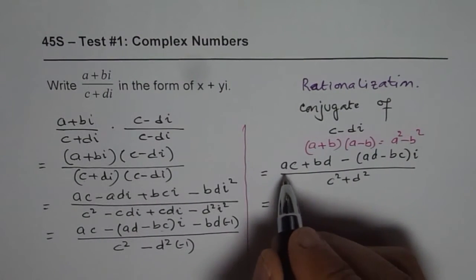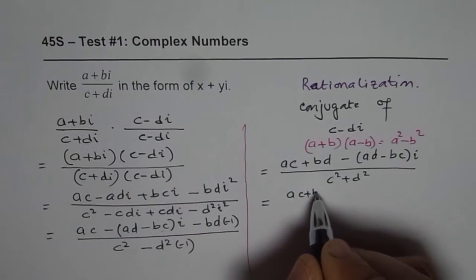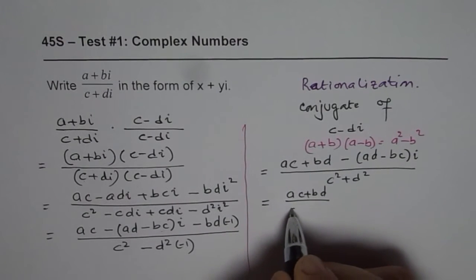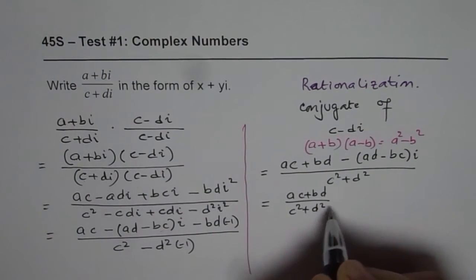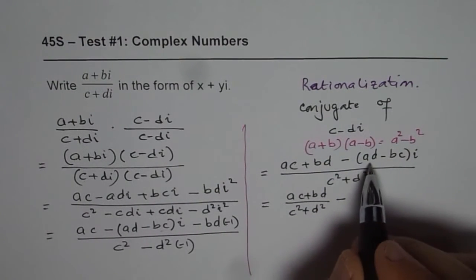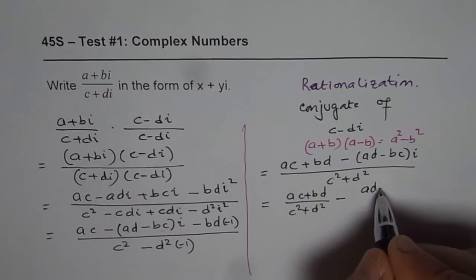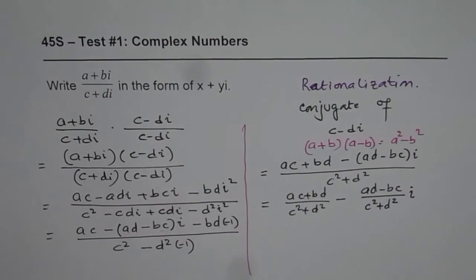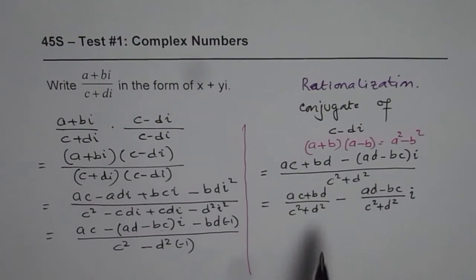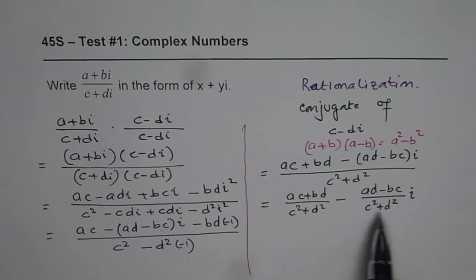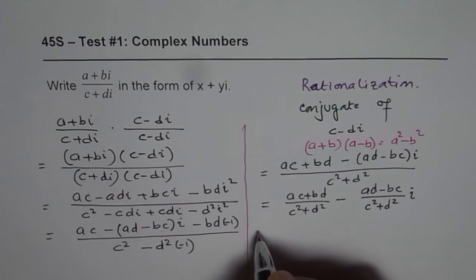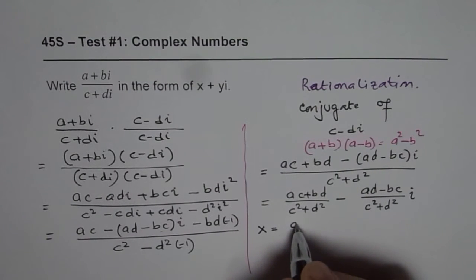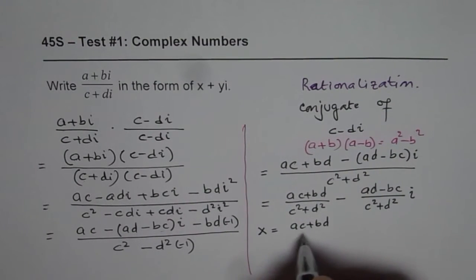Real term will be ac plus bd divided by c square plus d square minus the imaginary term, which is ad minus bc over c square plus d square i. This is the form x plus yi. We do not have any imaginary term in the denominator, where x equals ac plus bd divided by c square plus d square.